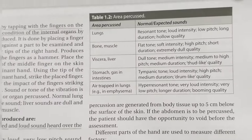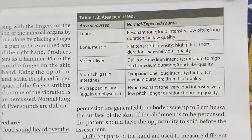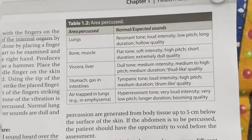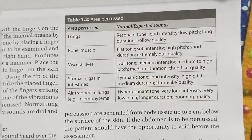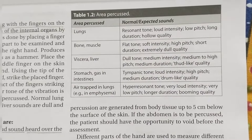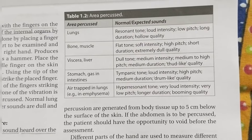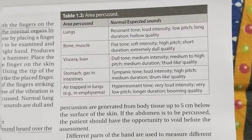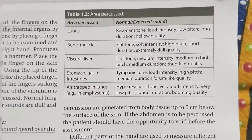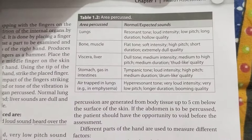In your examination, the percussion methods table is very helpful because everything is important to mention about the area of percussion. The areas include lungs, bones, muscles, liver, stomach, gas, air-trapped, and emphysema conditions. For each area there is a normal and expected sound. This table helps you determine what sound you will find during physical examination.